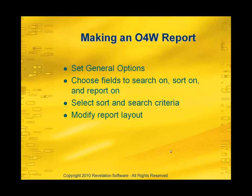Next, you would choose which fields you're going to search on, which fields you're going to sort on, and which columns you're going to display in the report. Then you can modify the select criteria and the search criteria, so you can get ascending or descending sorts. Finally, you would modify your report layout, setting things like colors, fonts, break-ons, and subtotals. It's a relatively simple process — you don't need to write any code, but you can if you'd like. So why don't we go right into the tool and take a look at creating a report using O4W against a D3 data source.